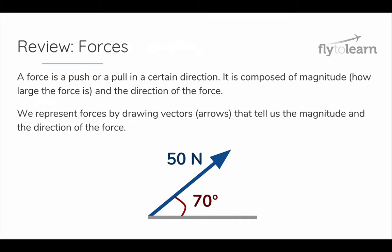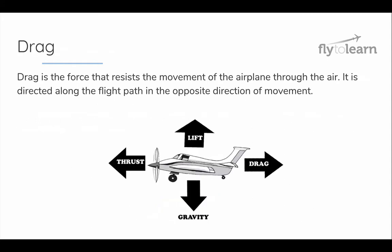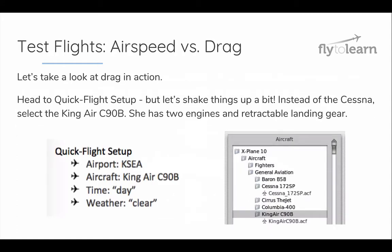As a review, a force is a push or a pull in a certain direction, described by its magnitude or size and its direction. Drag is the force that resists the movement of an airplane through the air. It is directed along the flight path in the opposite direction of the plane's movement. Let's dive in and take a look at drag in action.